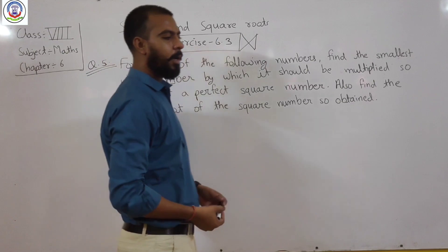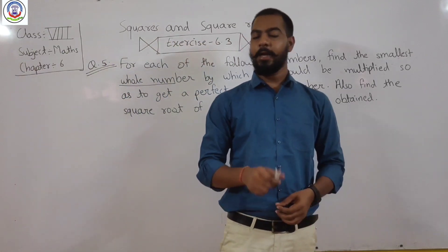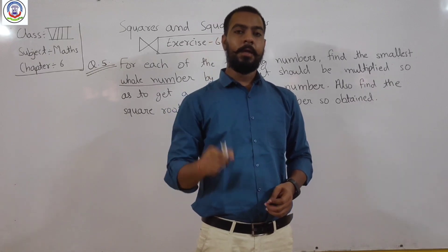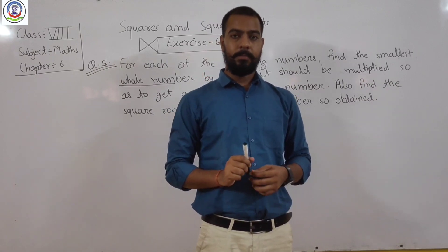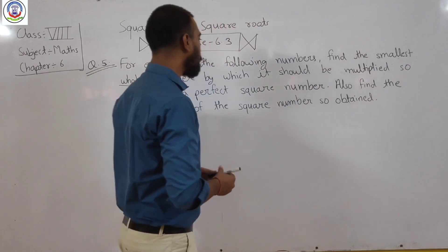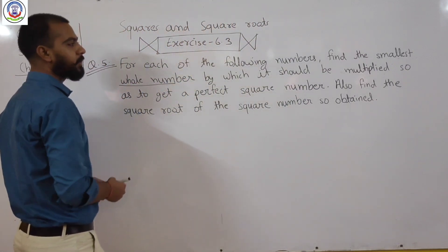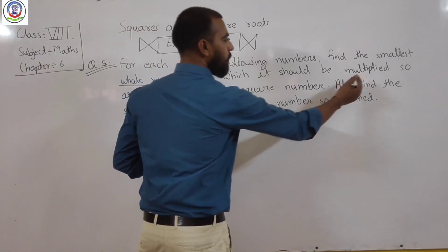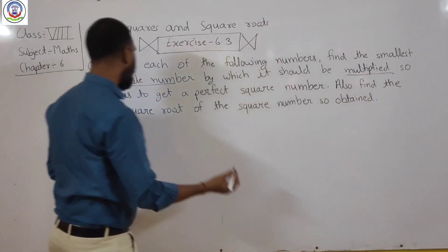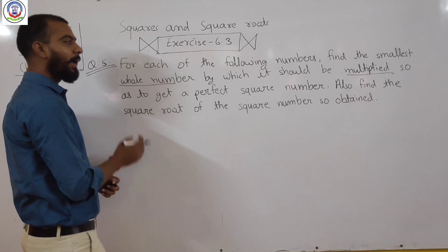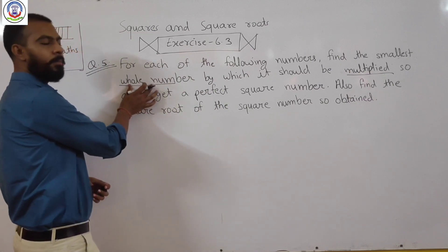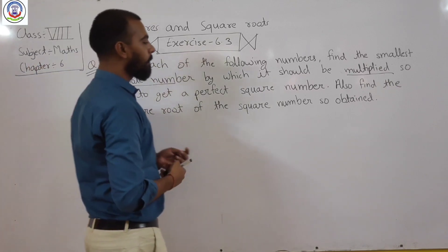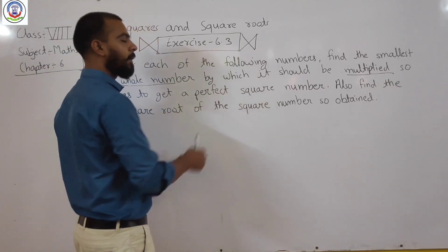That means you are given a number and that number is not a perfect square — meaning there is no exact square root of that number. So we have to make that number a perfect square by multiplying it by the smallest whole number possible.